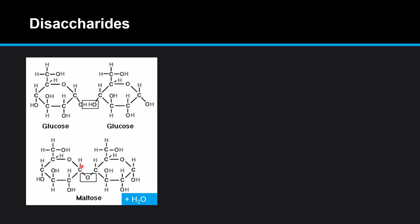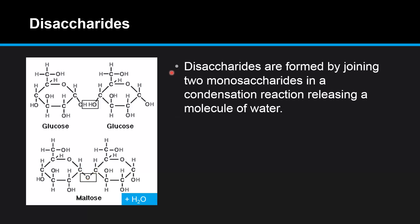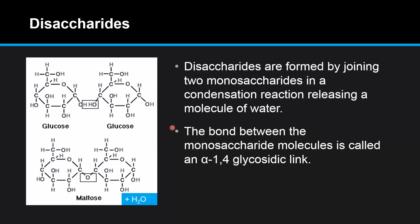This is carbon number one and this is carbon number four, so the bond is between carbon number one and carbon number four, hence it's called an alpha 1,4 glycosidic link. Disaccharides are formed by joining two monosaccharides in a condensation reaction releasing a molecule of water. The bond between the monosaccharide molecules is called an alpha 1,4 glycosidic link or an alpha 1,4 linkage.